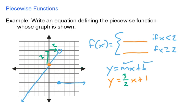Now remembering that y and f(x) basically mean the same thing, an equation that would define the first part of my graph would be three halves x plus one. So f(x) equals three halves x plus one if x is less than 2.